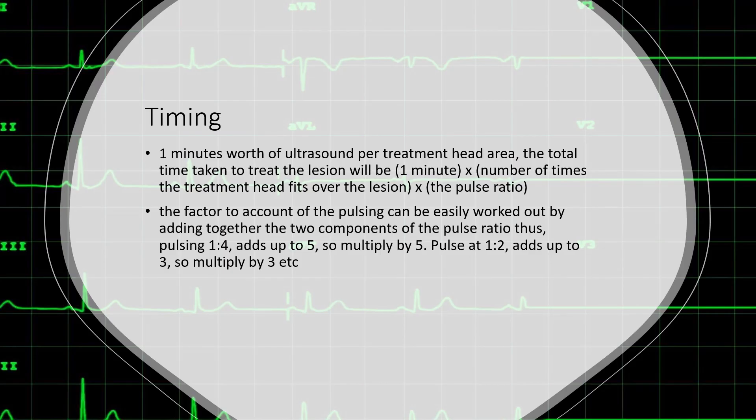So how do we work out treatment time? One minute's worth of ultrasound per treatment head is the basis. The total time is: one minute × number of times the treatment head fits over the lesion × the pulse ratio multiplier. The pulse ratio multiplier is easy to calculate — simply add the two components together. For one to four, add to get five and multiply by five. For one to two, add to get three and multiply by three.